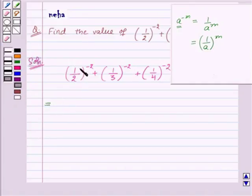Now here it is (1/2)^(-2). So to get the positive exponent, we will take the reciprocal of the base, that is (2/1)^2 plus, again we will do the same thing.